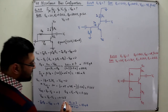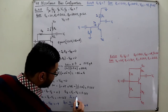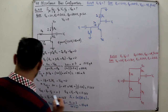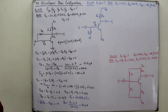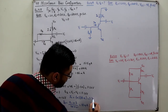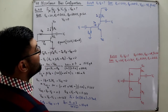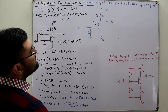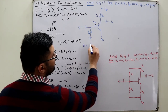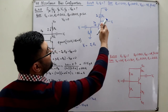The collector current IC is beta times IB. Beta is 45 and IB is 83 microamperes, so IC comes out to be 3.7 milliamperes. We are asked to find VC and VB. VC is the voltage across RC, which is IC times RC.